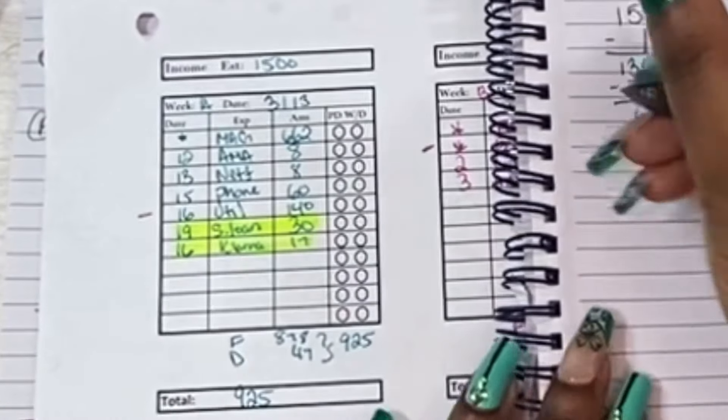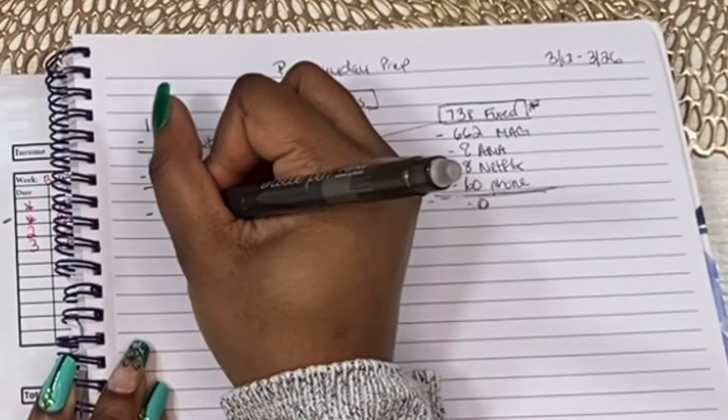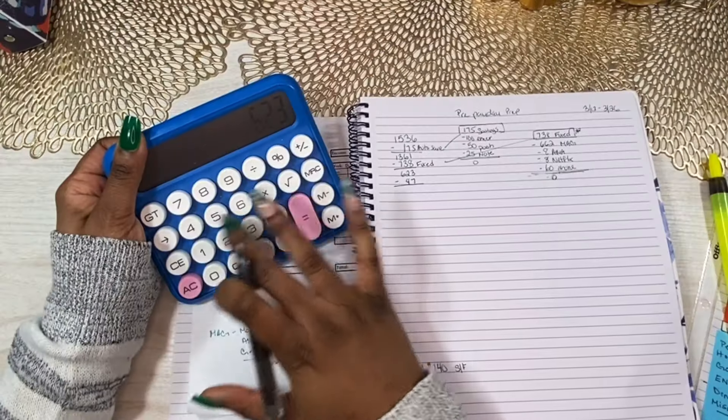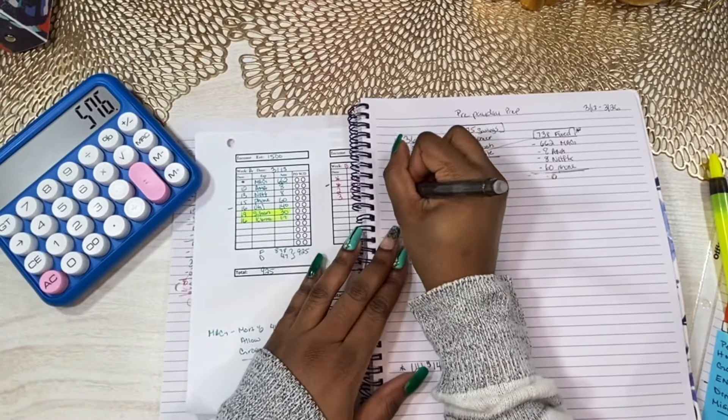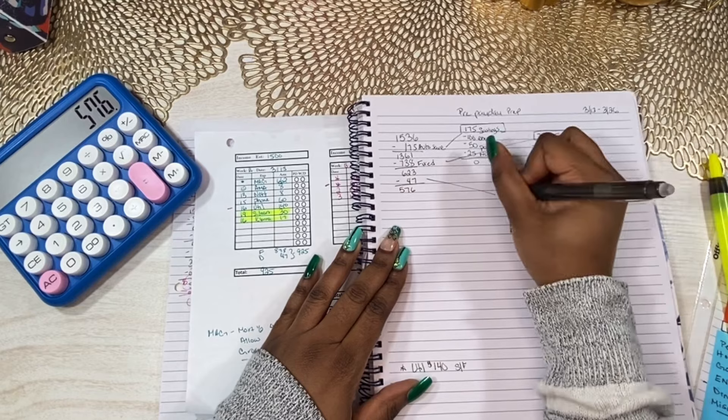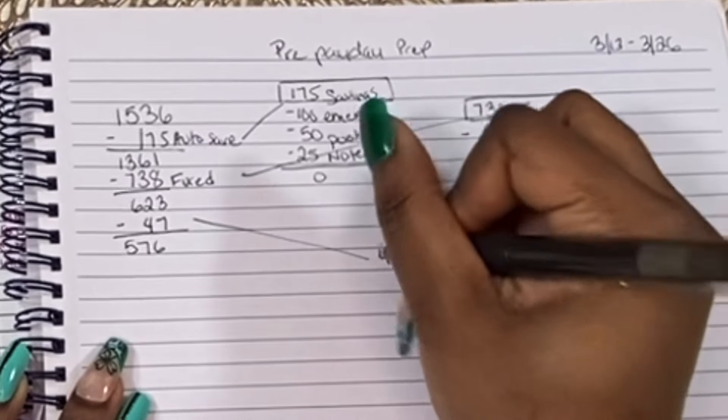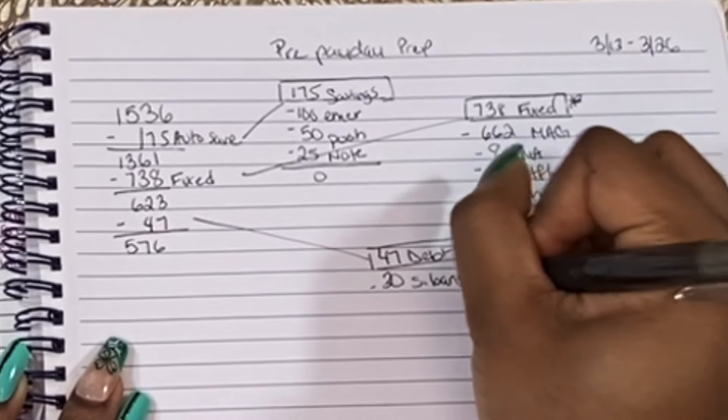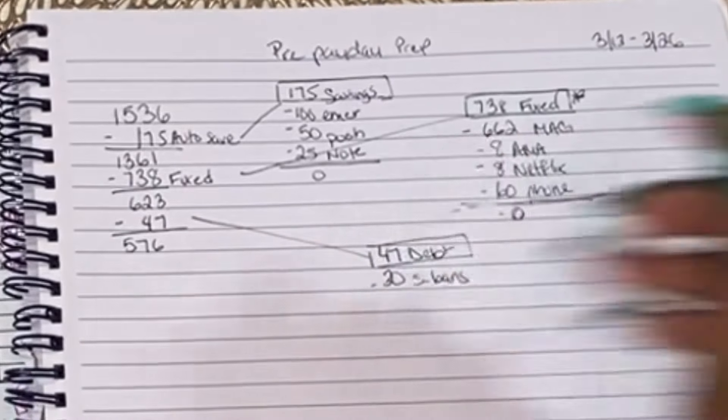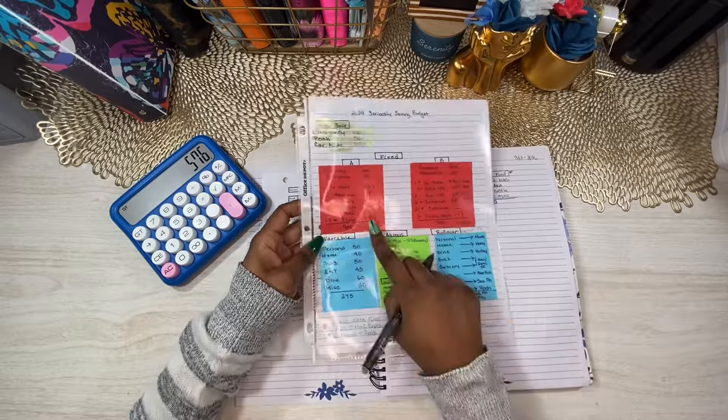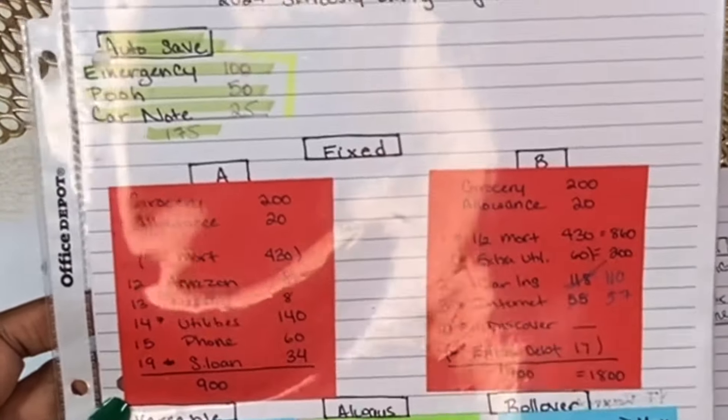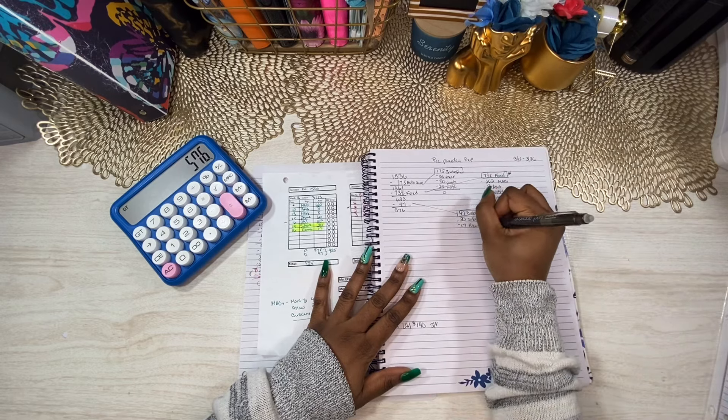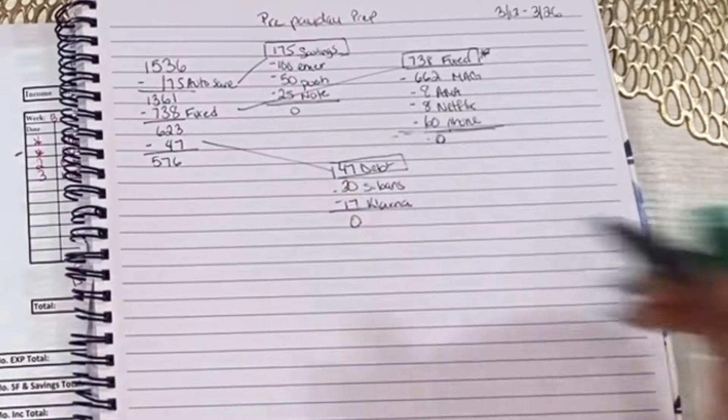$623 is what we have left. The next thing we pull out is debt, and you'll see those highlighted in yellow here. Debt is a total of $47. That's $576. So $47 debt. It's $30 for our student loans. The bill is really only about $24, but I try to pay, actually, my goal is to pay $34. And then $17 is going to go to my last clarinet payment. So that zeroes out.